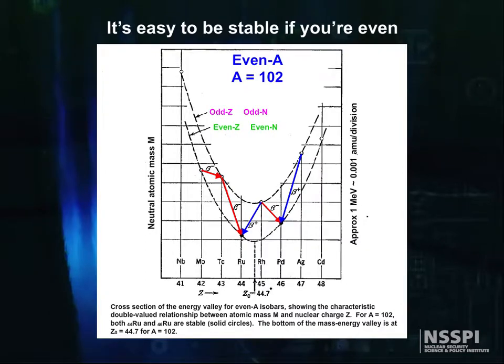The graph is typical of even-numbered nuclides for a given A. There are usually two stable nuclides at the bottom of the valley. In this case, ruthenium-102 and palladium-102. You can also see that there are actually two valleys here. One is for even-even nuclides, which have lower ground state energy, and odd-odd nuclides, which have higher energy and are therefore more likely to decay.